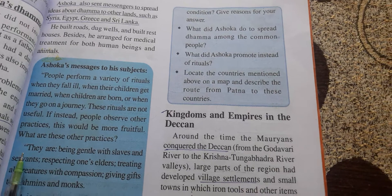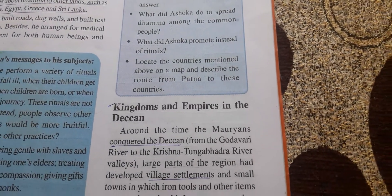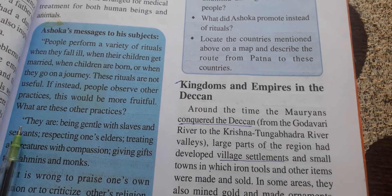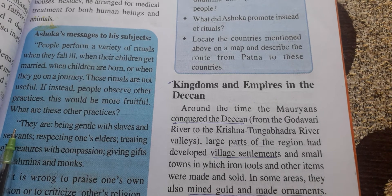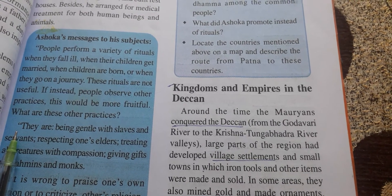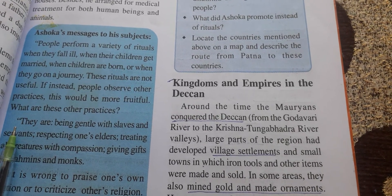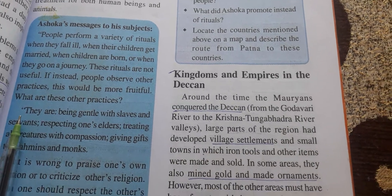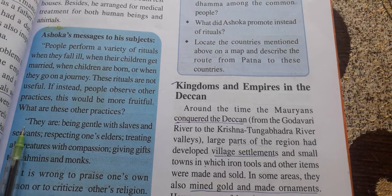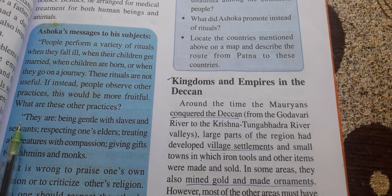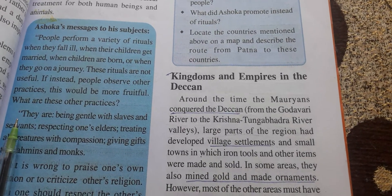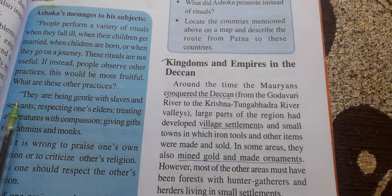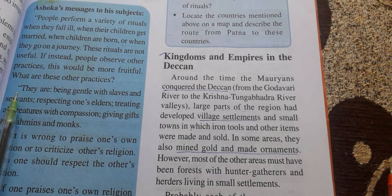Today we will discuss about kingdoms and empires in the Deccan area. The Deccan area refers to South India — the Deccan Plateau. It includes Tamil Nadu, Maharashtra, Madhya Pradesh, Telangana, Andhra Pradesh, and Kerala. During the Mauryan period, the Mauryans conquered the Deccan areas from the Godavari river to the Krishna-Tungabhadra river valley. At that time, a large part of this region developed village settlements and small towns.